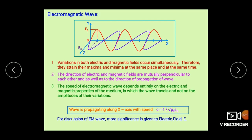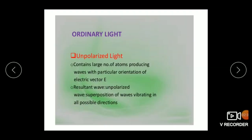In our further discussion we consider only the vibrations of electric field. Ordinary light or unpolarized light is emitted by a number of atoms. These atoms are vibrating and due to those vibrations the electromagnetic wave is produced. Suppose the wave is propagating along the x-axis and its electric field vibrates along the y-axis and its magnetic field vibrates along the z-axis. This is for one atom, but for another atom if the wave is propagating in the same direction, the electric field does not necessarily vibrate along the y-axis.